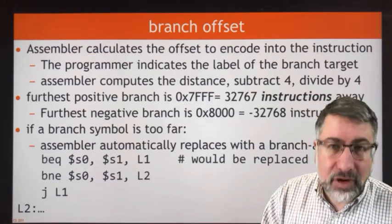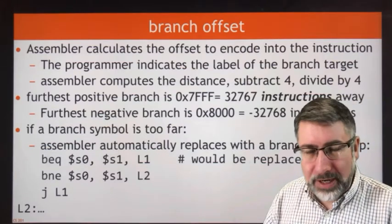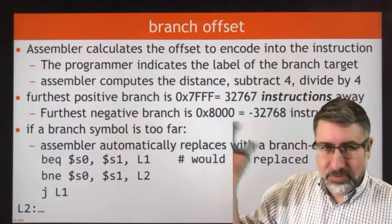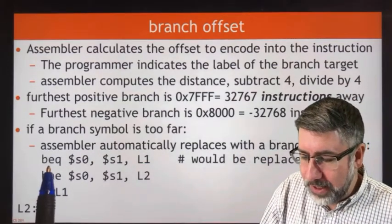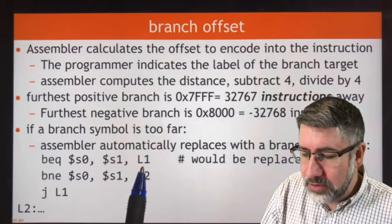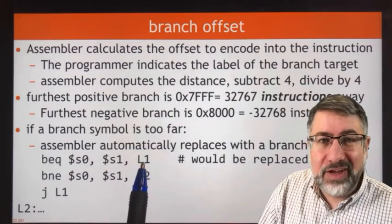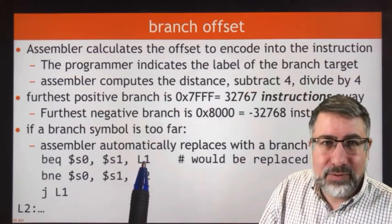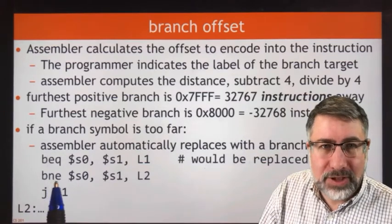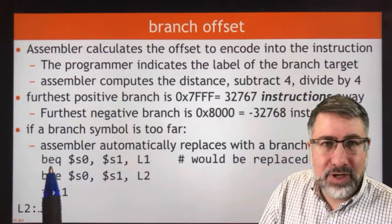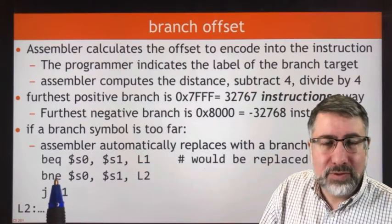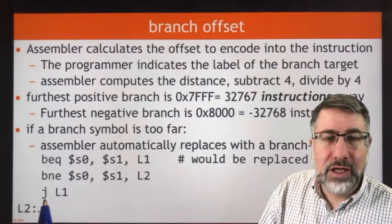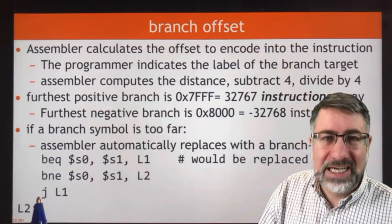If you need to branch farther than that, you can create a pseudo-branch, which is a structure that uses a jump instead to be able to branch much, much farther. So if, for example, you were trying to branch if these two registers were equal to the label called L1, and if L1 was too far away, what you can do — and what the assembler will do — is instead replace that with an opposite branch to skip a jump. So we want to branch if equal to L1.